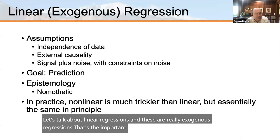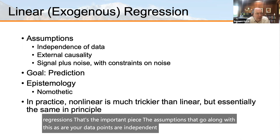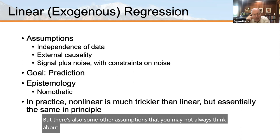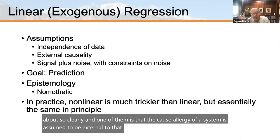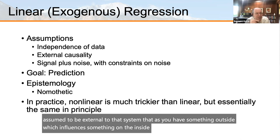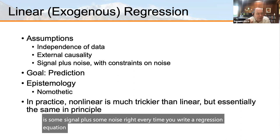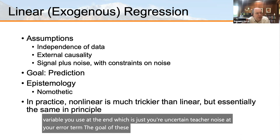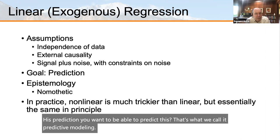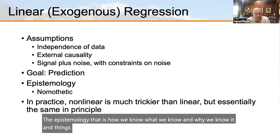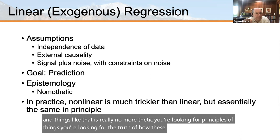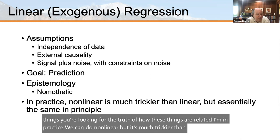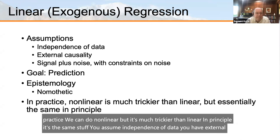Let's talk about linear regressions — really exogenous regressions. The assumptions include that data points are independent of one another. Causality is assumed to be external to the system: something outside influences something inside. You also assume the system is signal plus noise — there's always that epsilon at the end, your uncertainty or error term. The goal is always prediction, which is why we call it predictive modeling. The epistemology is nomothetic: you're looking for principles, for the truth of how things are related.